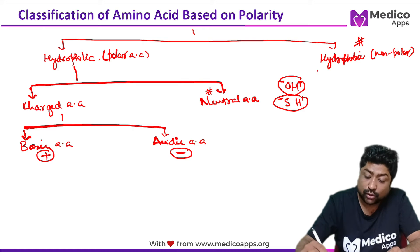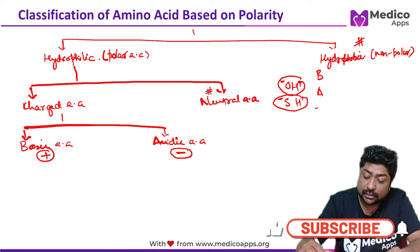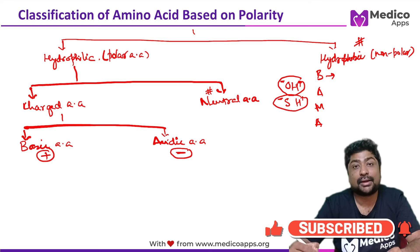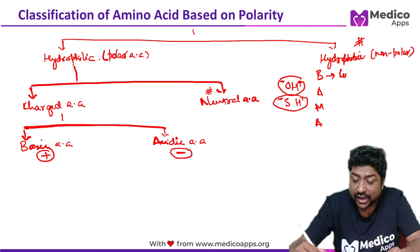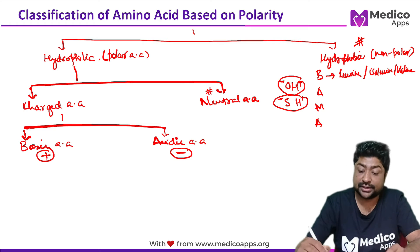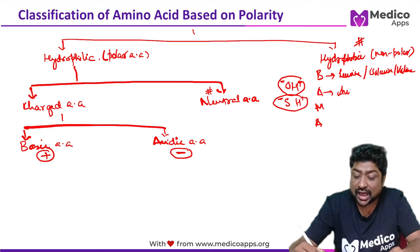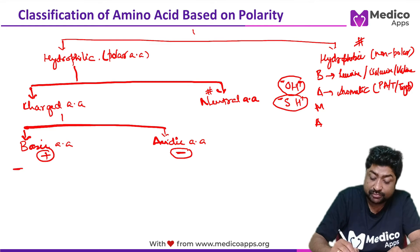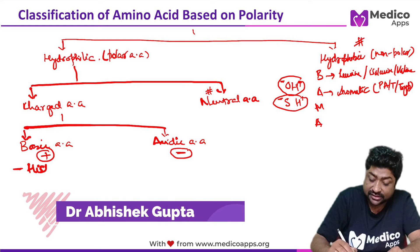Hydrophobic amino acids are remembered using the mnemonic BAMAHO. B stands for branched-chain amino acids: leucine, isoleucine, and valine — all hydrophobic. A stands for aromatic amino acids: phenylalanine, tyrosine, and tryptophan. One aromatic amino acid, histidine, is actually basic in character, so histidine comes under charged basic amino acids.